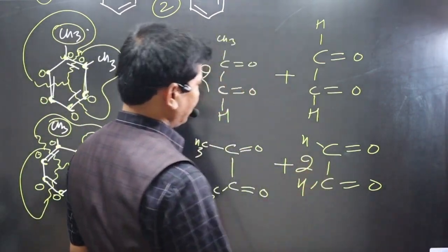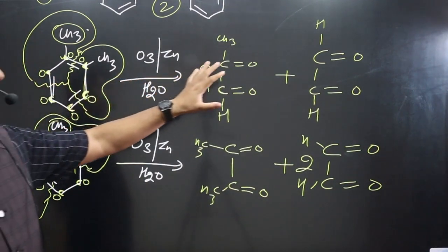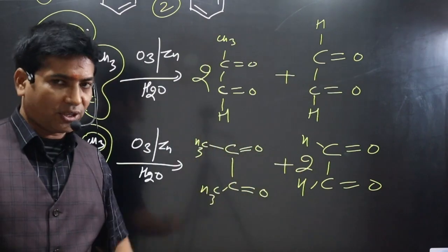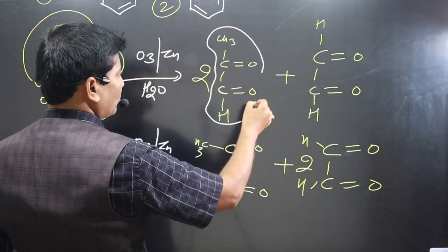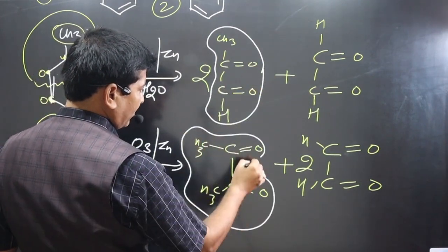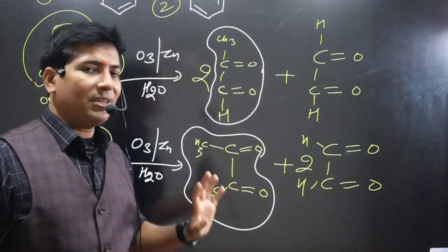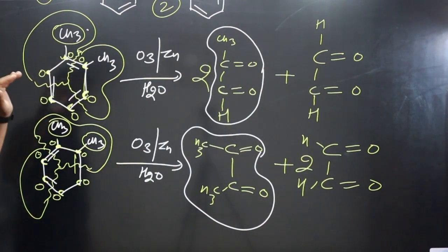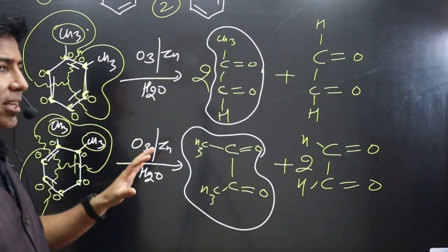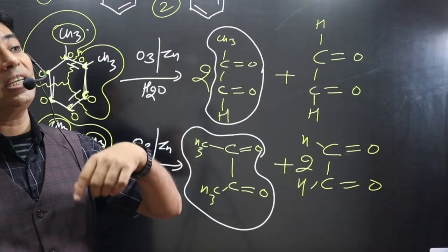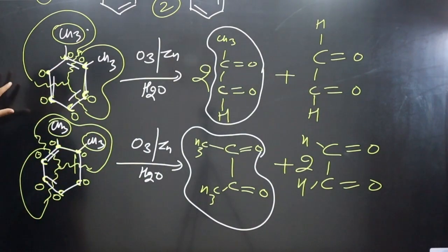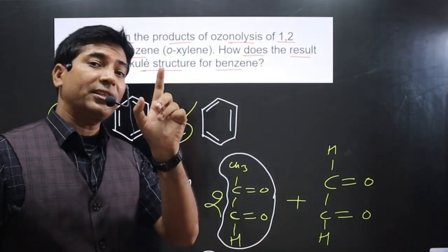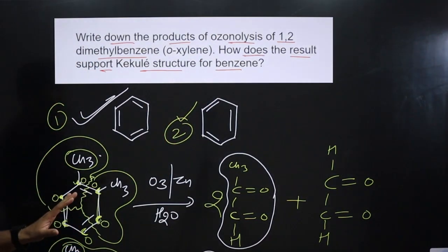Comparing the products: from the first Kekulé structure of benzene we get one set of products, and from the second structure we get a different set of products. These two sets are different — matching some but differing in others. Since each Kekulé structure of benzene produces different products on ozonolysis, this supports the existence of two different Kekulé structures due to delocalization of electrons. Therefore, this chemical reaction supports the Kekulé structure for benzene.